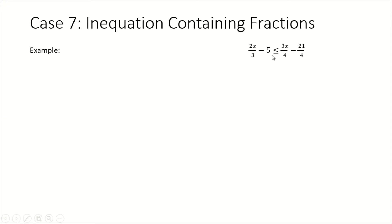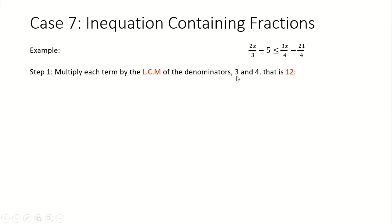The inequality is less than or equal to 3x all over 4 minus 21 all over 4. How would you approach a question like this? It's pretty simple — we're going to try to eliminate the fractions by finding the lowest common multiple of the denominators. The denominators are 3 and 4, so the lowest common multiple is 12.